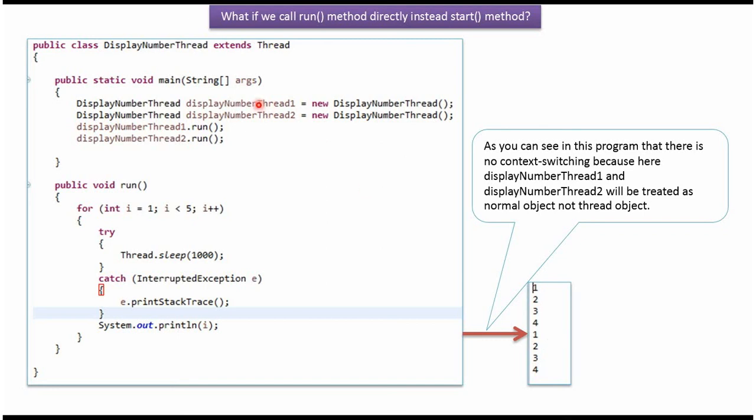Because here displayNumberThread1 and displayNumberThread2 will be treated as normal objects, not thread objects, because we are directly calling the run method.